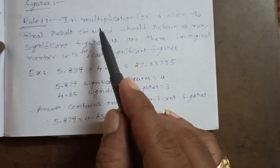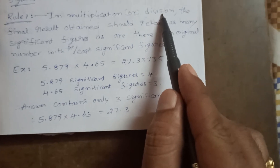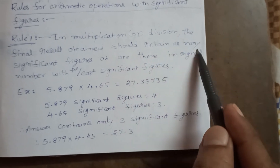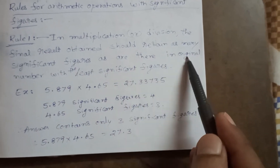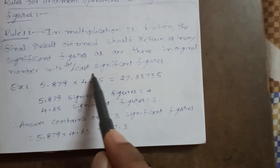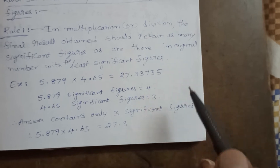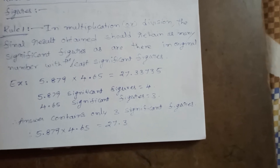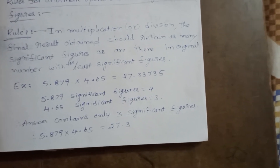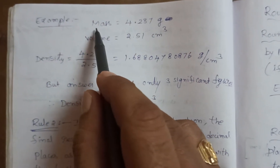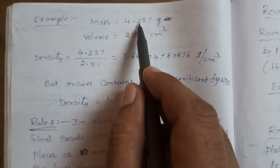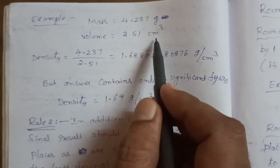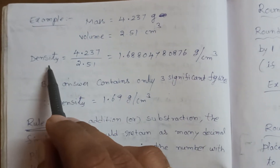To recap: for multiplication or division, the final result should retain as many significant figures as there are in the original number with the least significant figures. Here the least significant figure is 3, so the answer contains only 3 significant figures. One more example: the mass of a substance is 4.237 grams and the volume is 2.51 cubic centimeters.